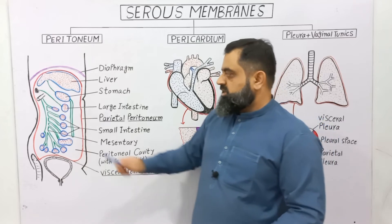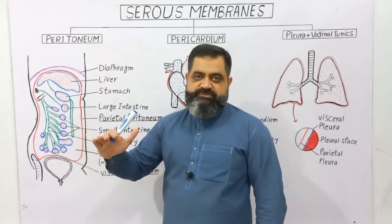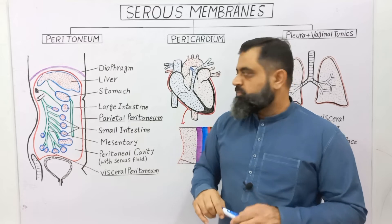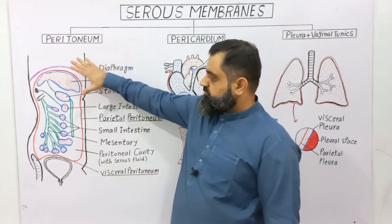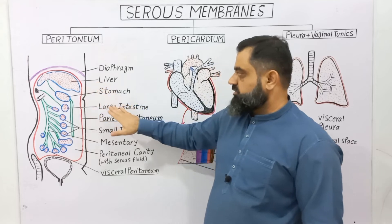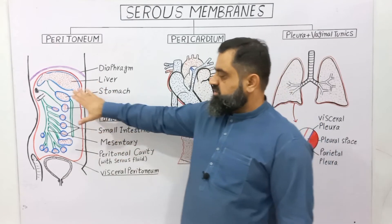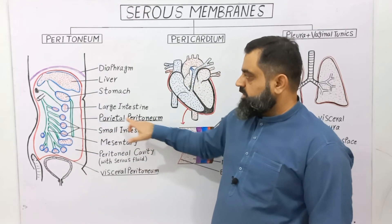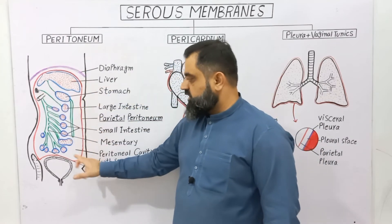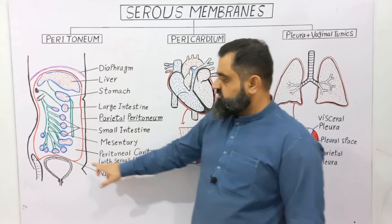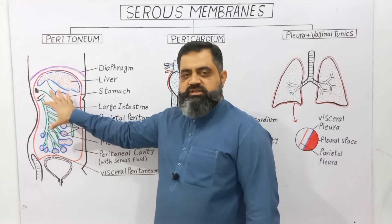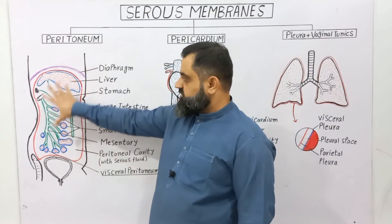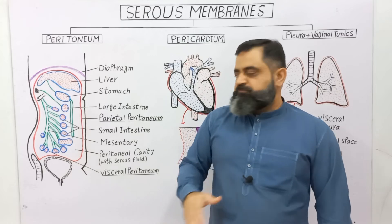Mesenteries keep the organs in place; otherwise they could intermingle and be displaced from one position to another. So in summary, on top there is the diaphragm, then organs like the liver, stomach, large intestine, and small intestine kept separated by mesenteries. There are two types of peritoneum: parietal peritoneum, which surrounds the outermost part of the cavity, and visceral peritoneum, which surrounds the different organs present in the abdominal cavity.